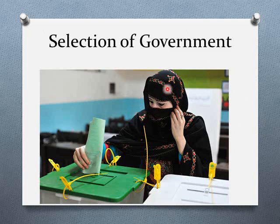When people vote, they mark a ballot paper, fold it in a particular manner, and put it into a sealed box. After the votes are cast, they are counted. That's how the selection of government happens — this is the whole voting and election process, and then the government is selected.